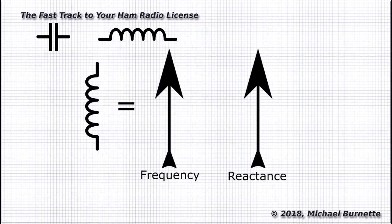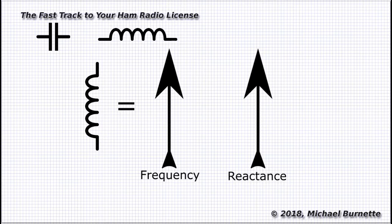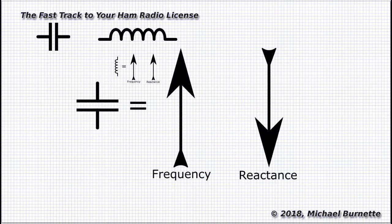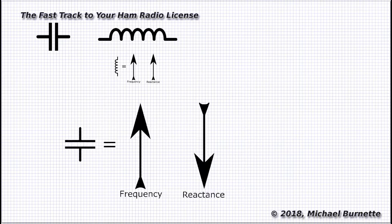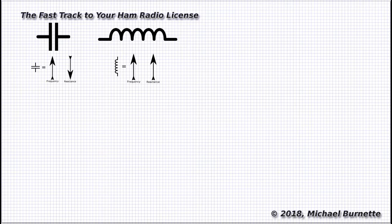For inductors, as the frequency gets higher, the reactance gets higher. At the lowest frequency, DC, the inductor looks essentially like a straight wire. For capacitors, as the frequency gets higher, the reactance gets lower. At DC, the capacitor looks just like an insulator. Since these components behave in opposite ways relative to frequency, we need a formula for inductive reactance and another for capacitive reactance.